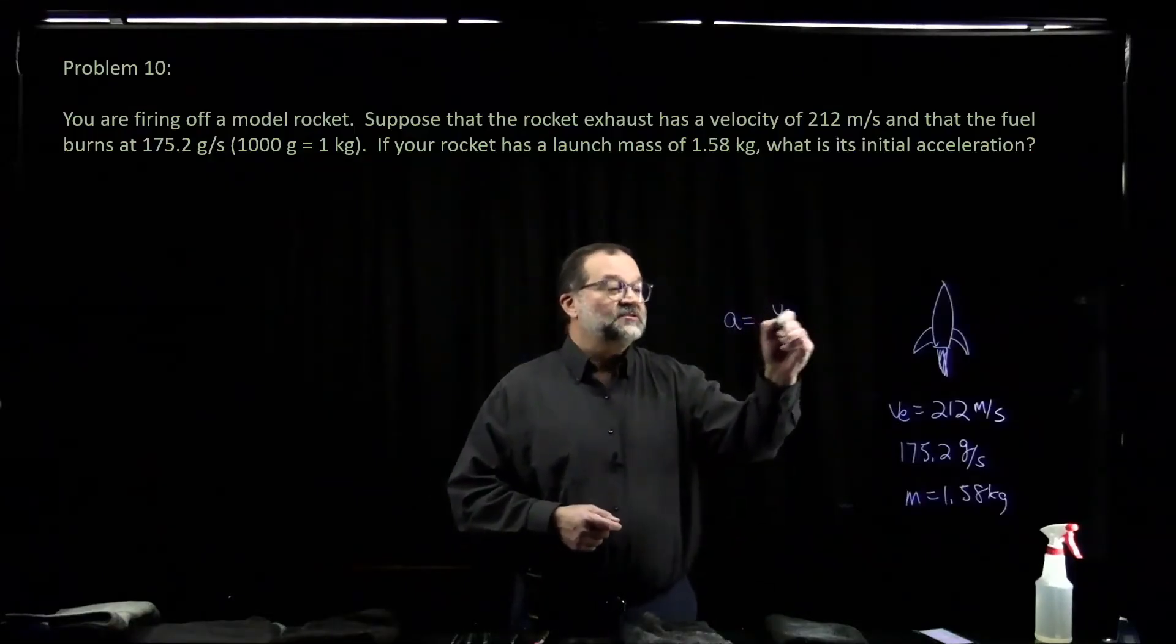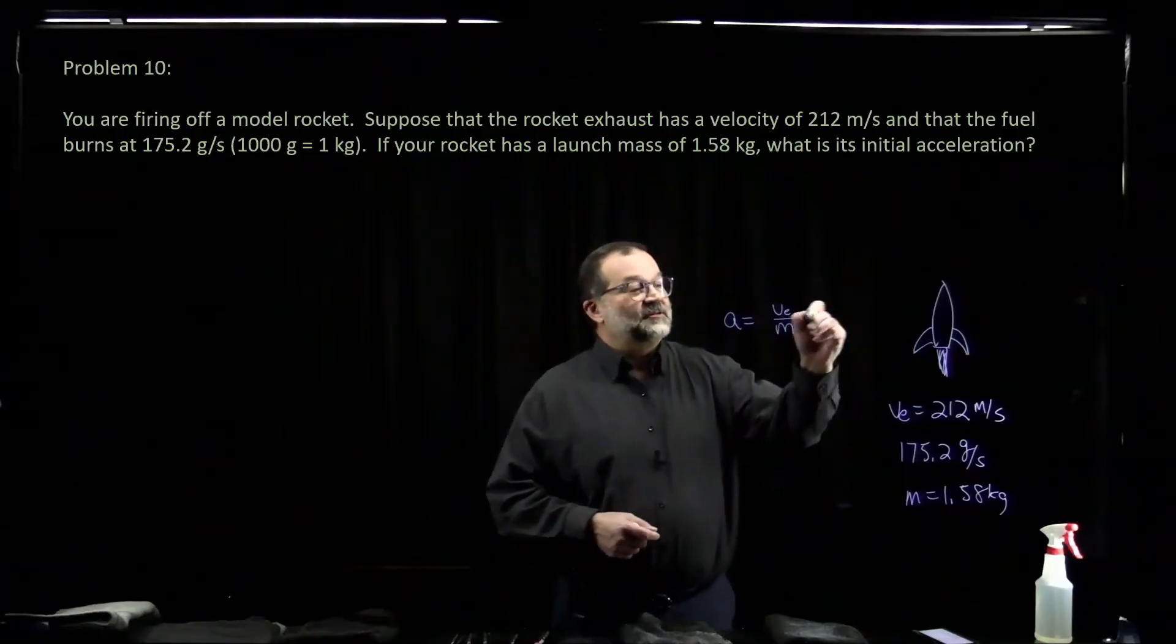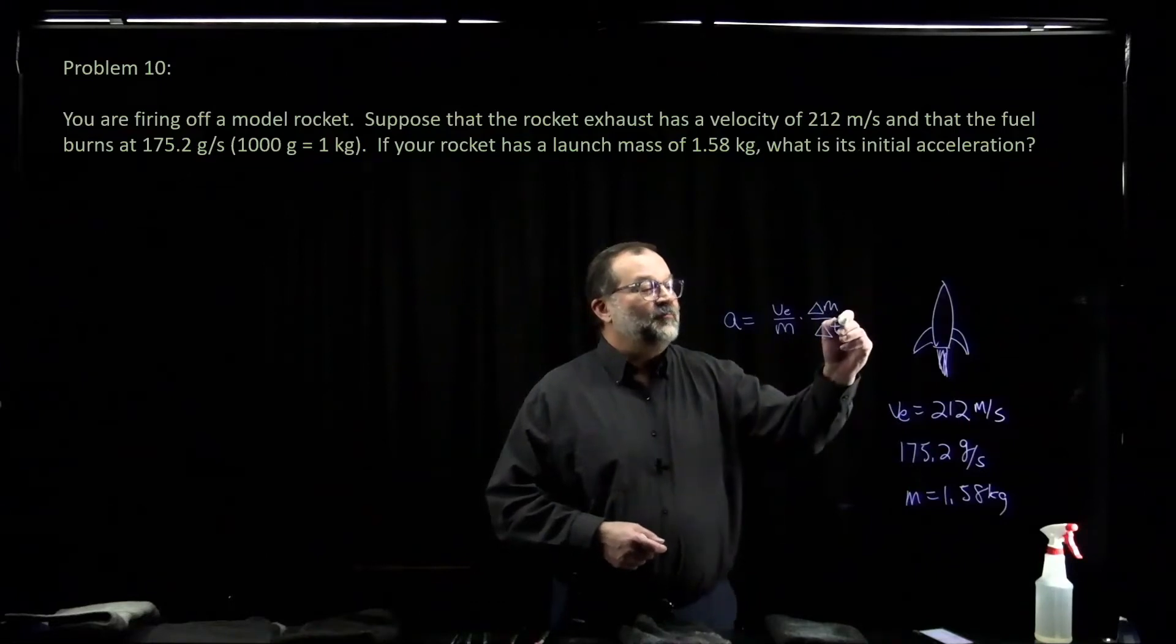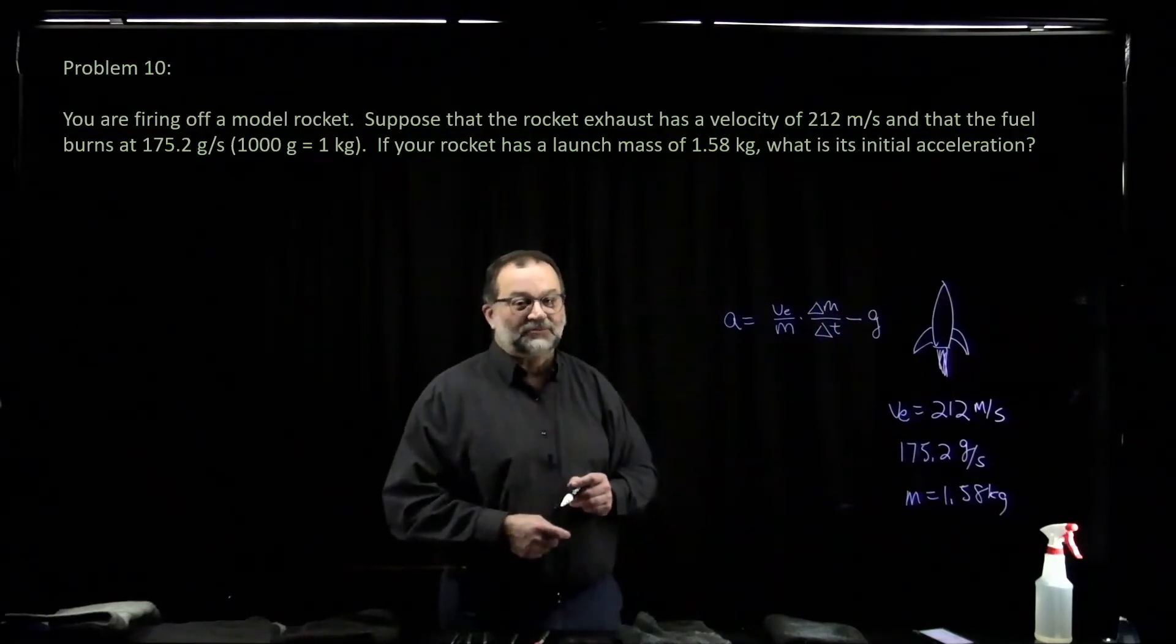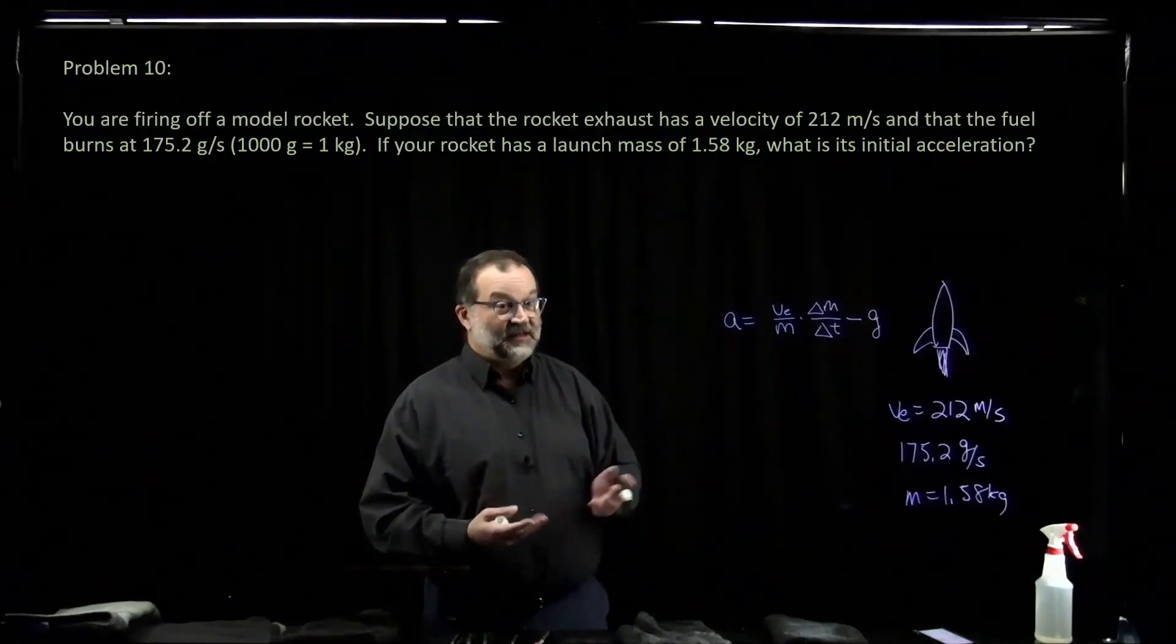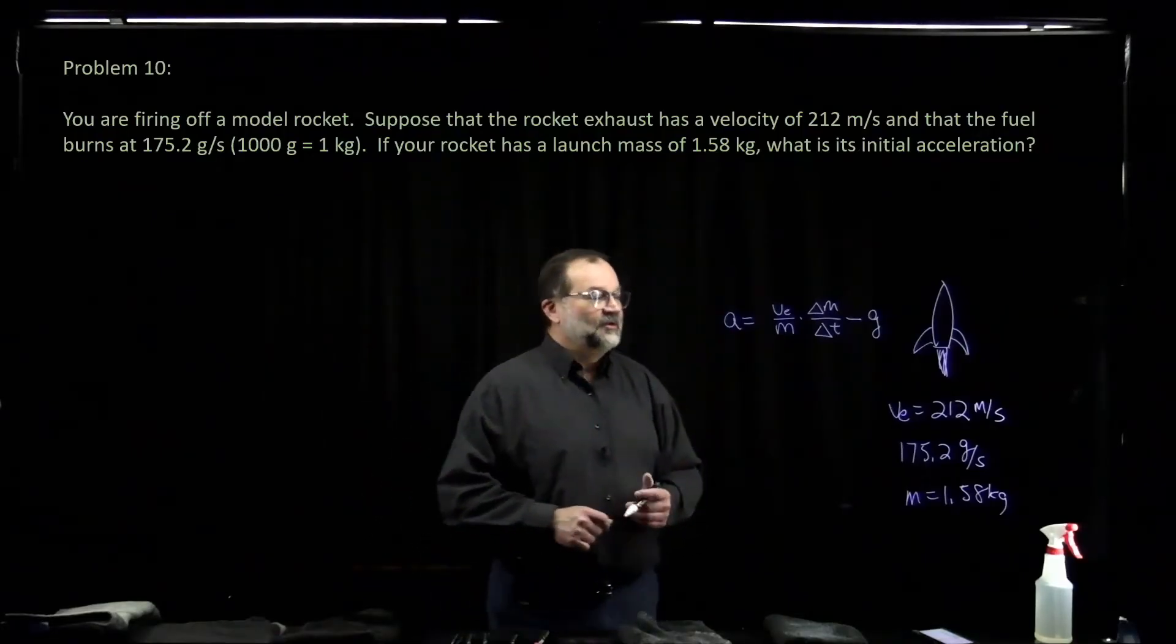It's the velocity of the exhaust divided by the mass of the rocket times the mass per unit time it's losing minus the acceleration of gravity. You have to subtract out the acceleration of gravity because it's there. If it's not there, you're not on Earth. You're out in space somewhere.